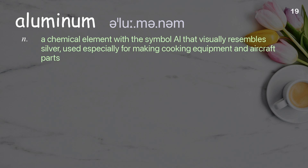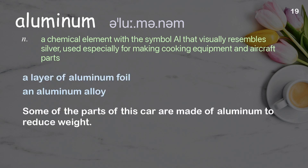Aluminum. A chemical element with the symbol Al that visually resembles silver, used especially for making cooking equipment and aircraft parts. Examples: A layer of aluminum foil. An aluminum alloy. Some of the parts of this car are made of aluminum to reduce weight.